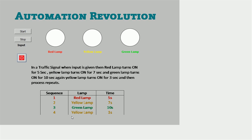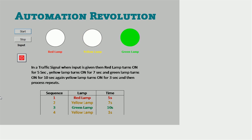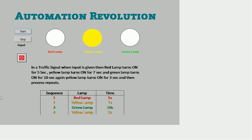This cycle will keep going until we press the stop button. Let's start — I will press the start button. You can see the red lamp is on for five seconds, then the yellow lamp turns on for seven seconds, then the green lamp turns on for ten seconds, then yellow lamp turns on for three seconds, and the cycle will continuously repeat. This is our logic, and behind this SCADA animation I have made PLC ladder logic using timers — that is what we need to learn in this video.